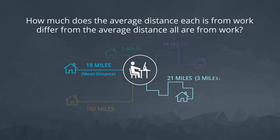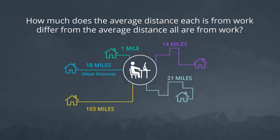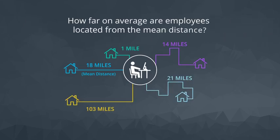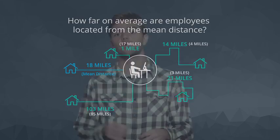So this one is three miles farther from work than the average, while this individual is four miles closer to work than the average. The standard deviation is how far, on average, individuals are located from this mean distance — so it is kind of like the average of all of these distances. We will take a closer look at this, but hopefully this gives you a strong conceptual understanding of what we'll be calculating in the next sections.